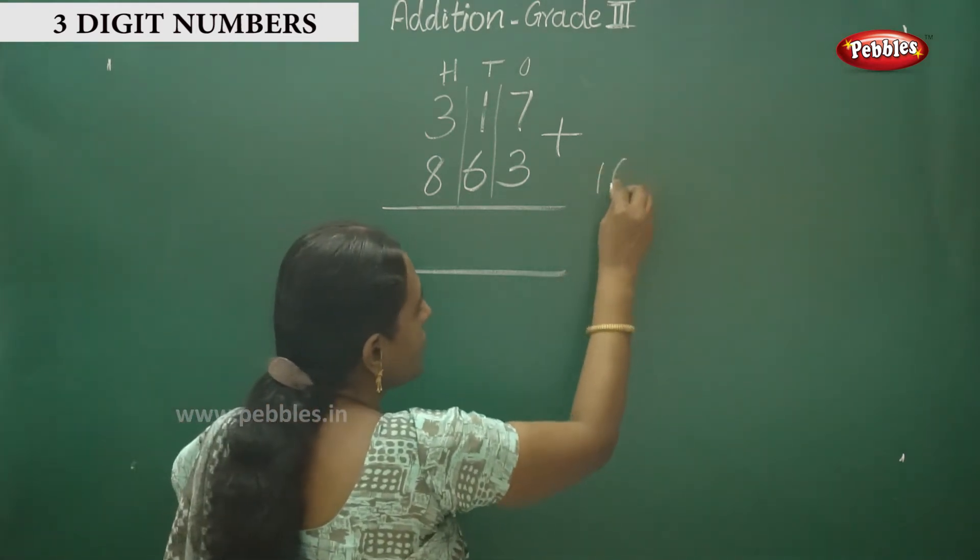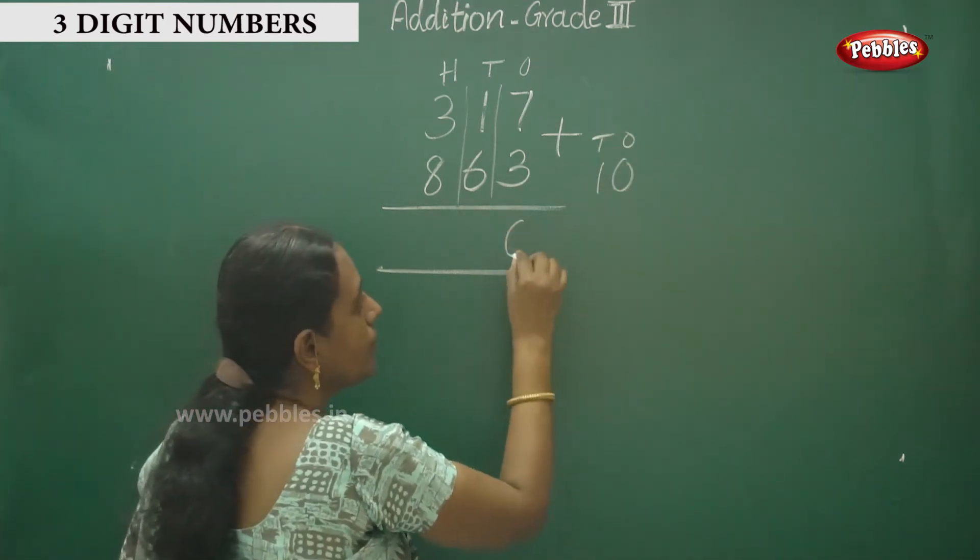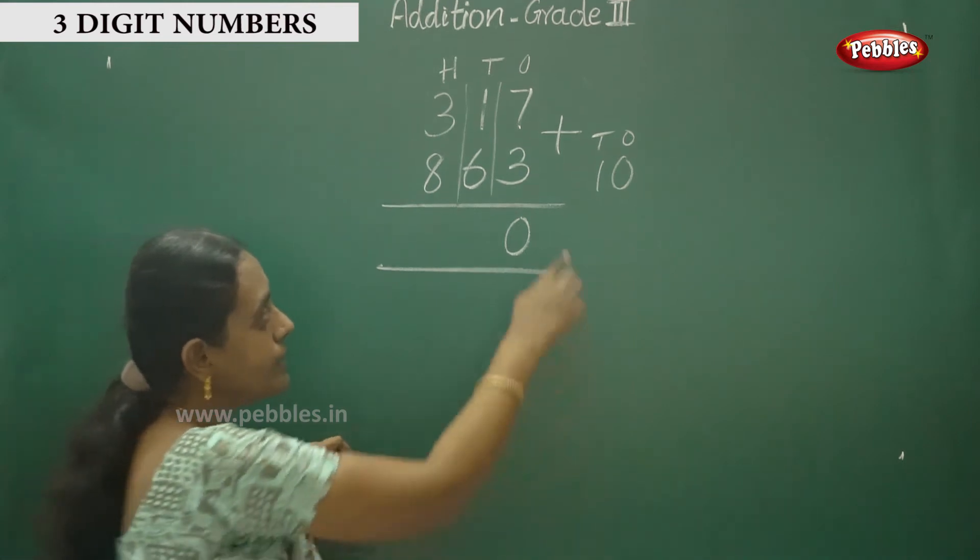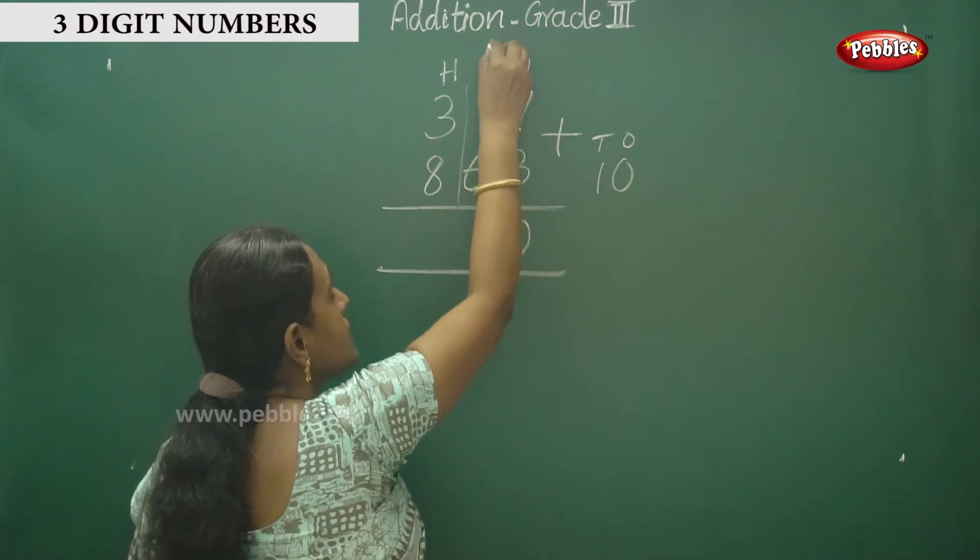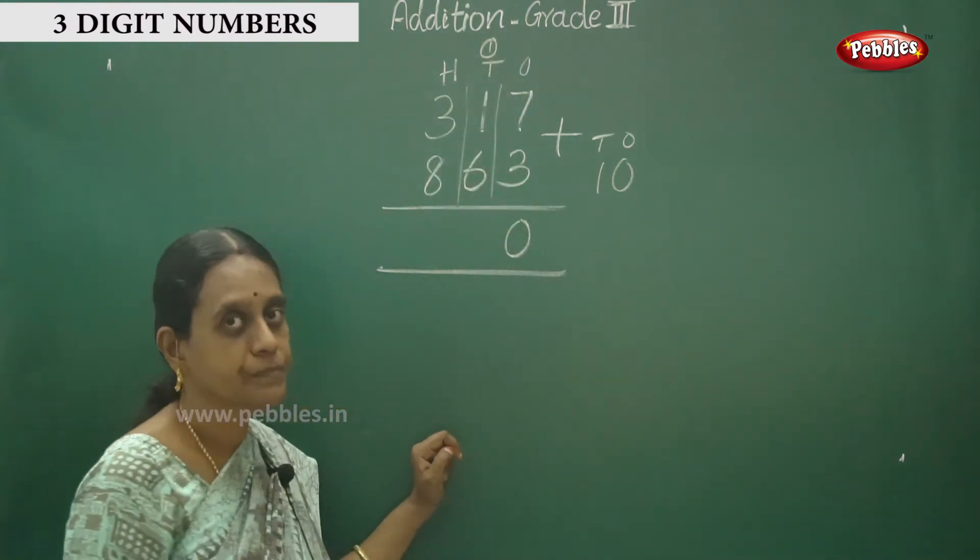Ten means what? This is ones and this is tens. So in the ones place we have zero. You have to put here zero, and this one is the tens place one. So you have to write over this tens place. Understand, children?